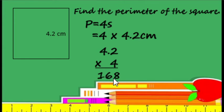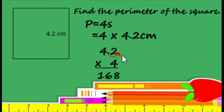Third step: count the number of decimal places in the factors. The factors are the numbers that we multiply. We place the decimal point to the right to count the decimal places. So we have 1 decimal place. Then last step: place the decimal point in the product. The decimal place in the product is equal to the total number of decimal places in the factors. Since we counted only one decimal place, there is also one decimal place in the product, placed going to the left.